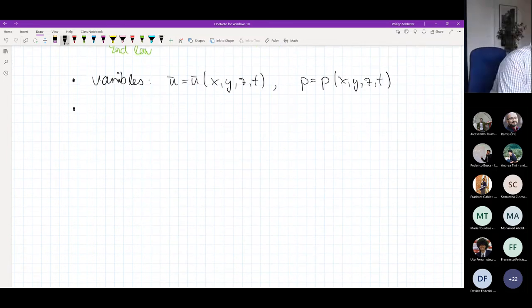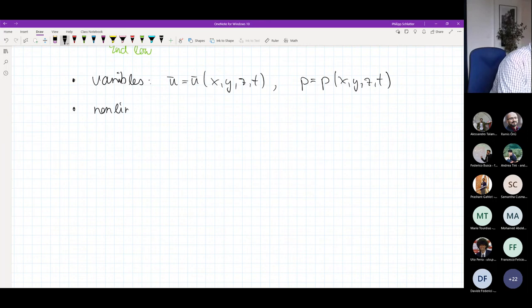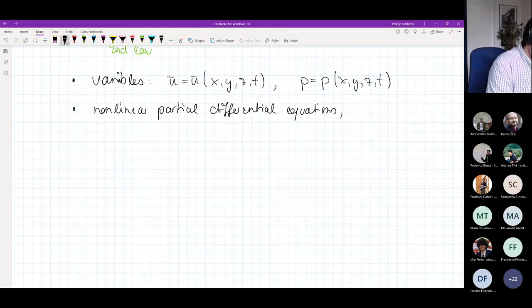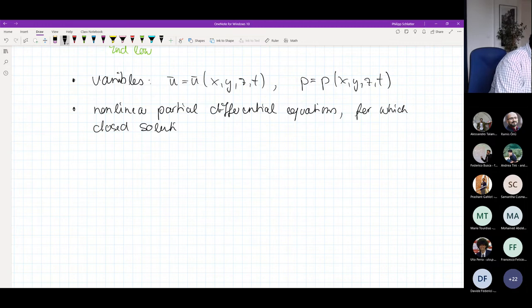If you look at this coupled system of the continuity equation and the Navier-Stokes equations, we can realize that this is actually a system of non-linear partial differential equations, for which closed solutions, so analytical solutions, do in general not exist except for a few rare cases.